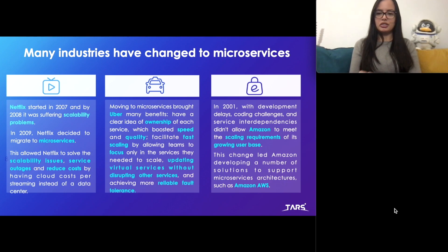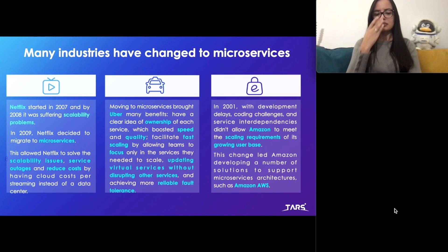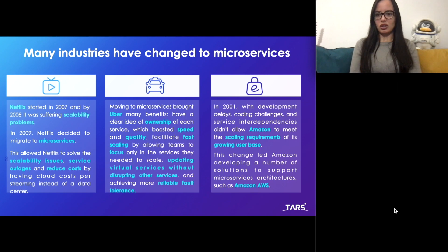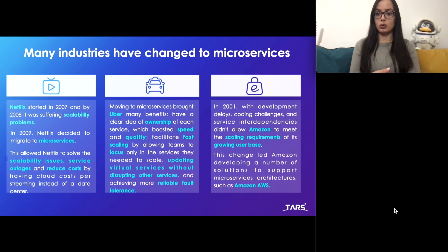Another interesting example is Uber. After launching, they struggled to develop new features, fix bugs, and rapidly integrate new changes to their source code. So they decided to move to microservices, which provided many benefits: developers had a clear sense of ownership of their code because they knew which service they were working on, and this boosted the speed and quality of development. Microservices also facilitated fast scaling by allowing teams to focus on their specific services and update them without disrupting other services.